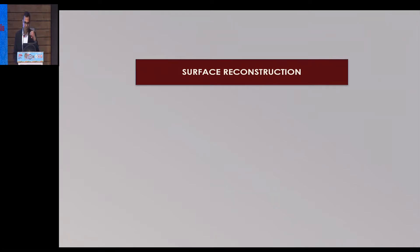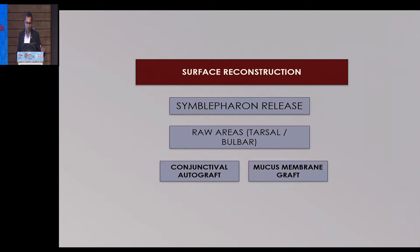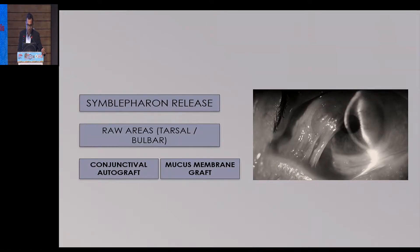Next is surface reconstruction — mainly symblepharon release. This is a simple procedure: you take care of raw areas, which may be tarsal or bulbar, and replace them with either conjunctival autograft or mucous membrane graft. It's important to emphasize: conjunctival autograft or mucous membrane graft only — amniotic membrane alone is not mature epithelium and will not prevent symblepharon reformation. So if you have a raw area after cutting the symblepharon, reflect it back and put MMG or conjunctival autograft from the other eye, covering all raw areas before proceeding with surface reconstruction.